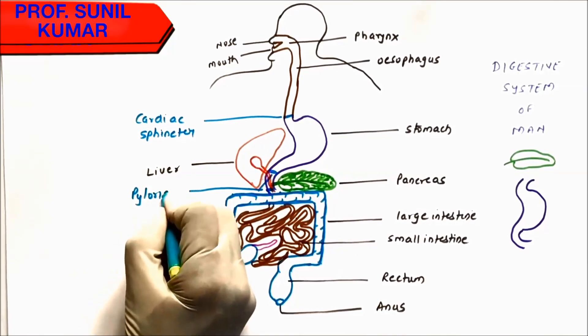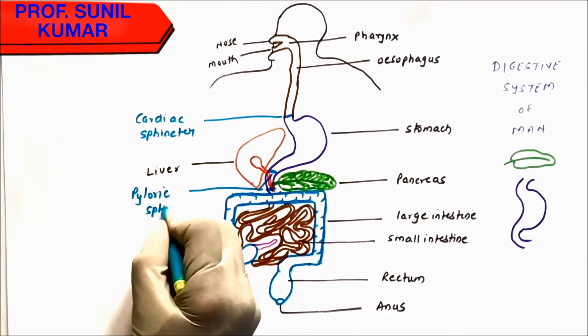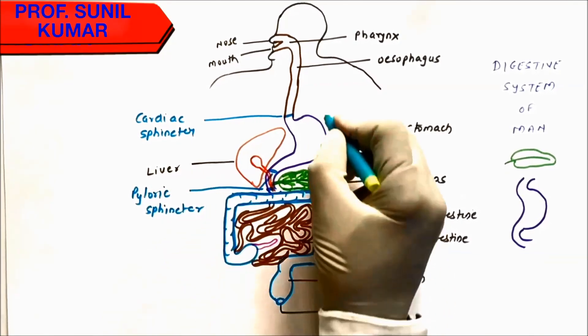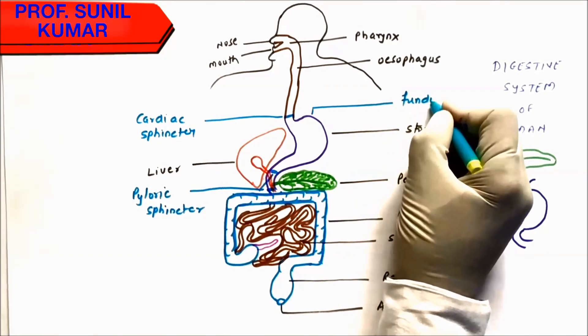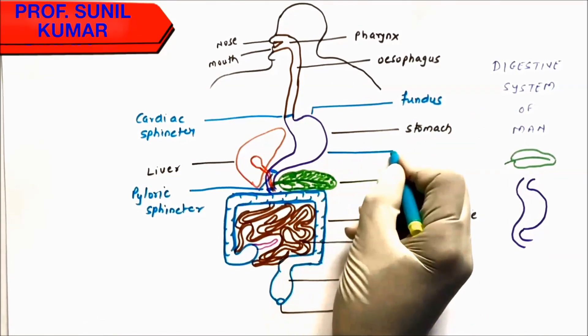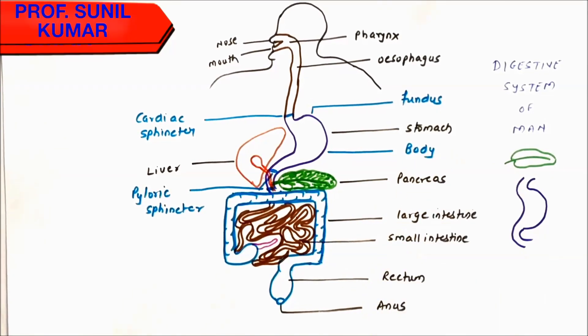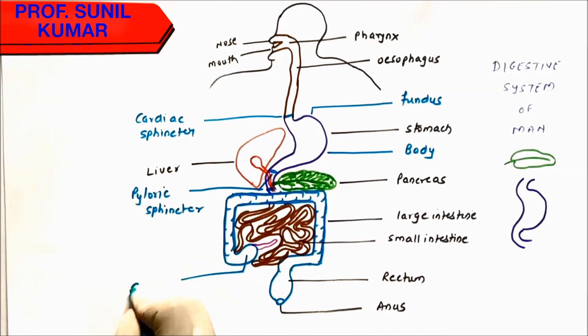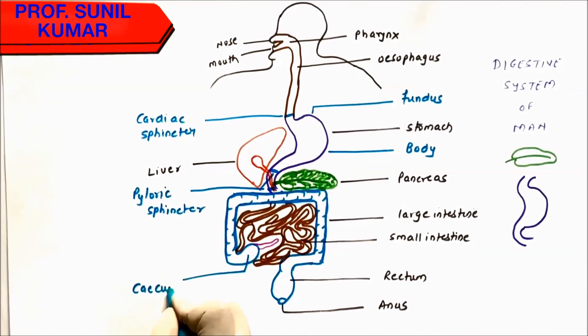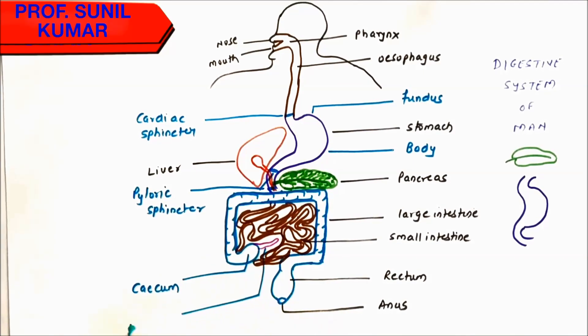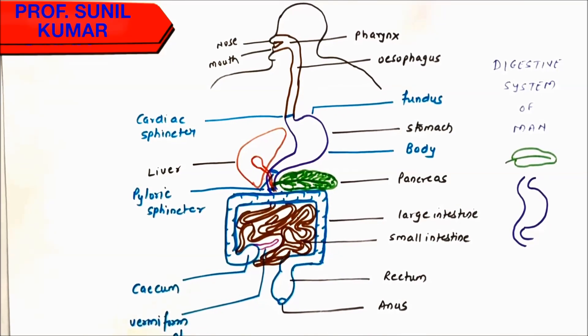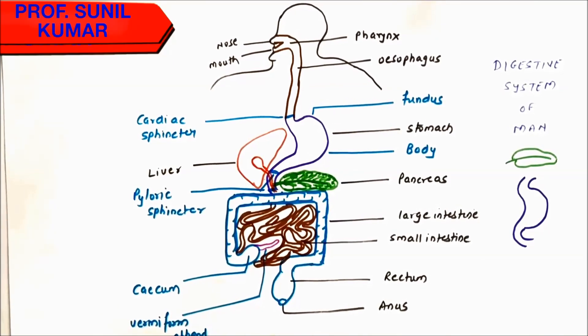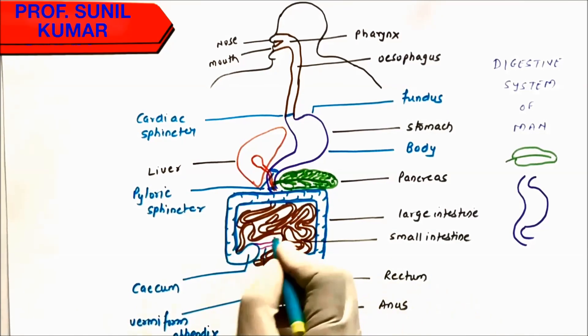The next part that we have is the dome-shaped part of the stomach that is called the fundus, and the lower part is called the body. The stomach releases HCl, pepsinogen, and mucus. This blind pouch-like structure is called the cecum, which has the vermiform appendix. This vermiform appendix was functional earlier and was used to digest cellulose. Now we eat everything cooked, so the appendix is not required.